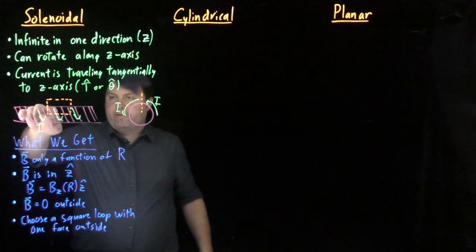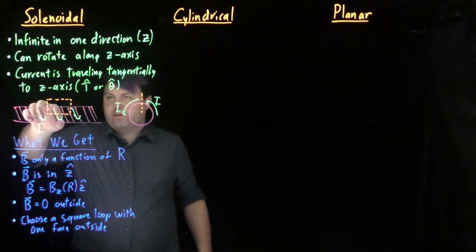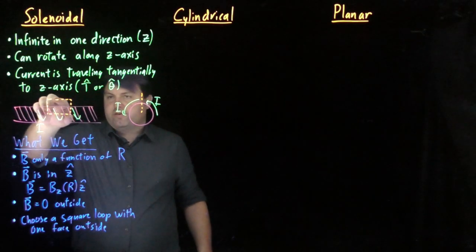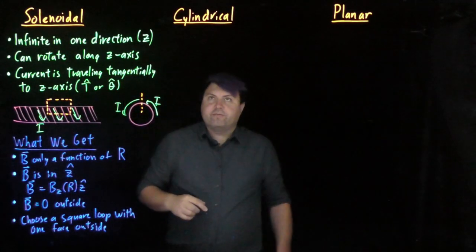And then we would have, this is not in the z-direction, so the dot product is zero for these two. This is zero, so the dot product is zero for this one, zero magnetic field because that's outside. So we only have one non-zero face.